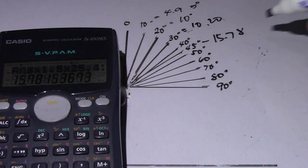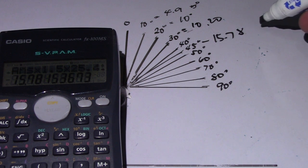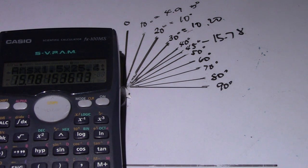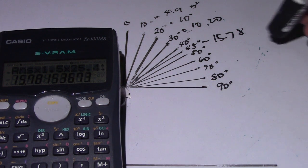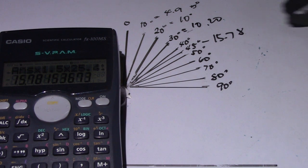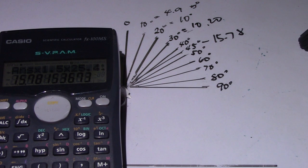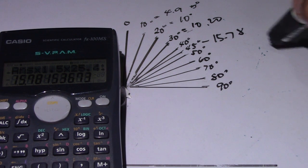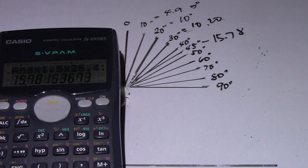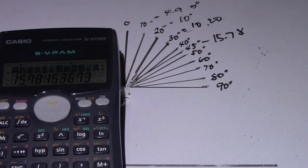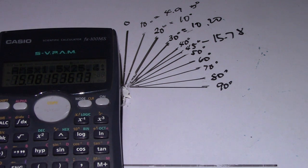So this is the formula when calculating the spool. If you have a 45-degree elbow, just multiply 15.78 by the diameter of the pipe, then subtract that from the total center-to-center length of the elbow and center-to-center of the pipe and elbow.